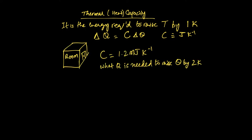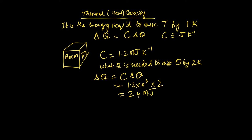Let's look at a brief example. A room has an overall thermal capacity of 1.2 megajoules per kelvin. What energy is needed to raise the temperature of this room by two kelvins? Using delta Q equals C times delta theta: 1.2 times 10 to the 6 times 2 equals 2.4 megajoules. That is what you need to raise the temperature of this room by two degrees kelvin, or equivalently two degrees Celsius, since the divisions on both scales are the same.